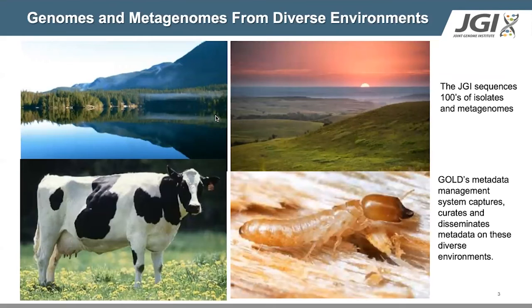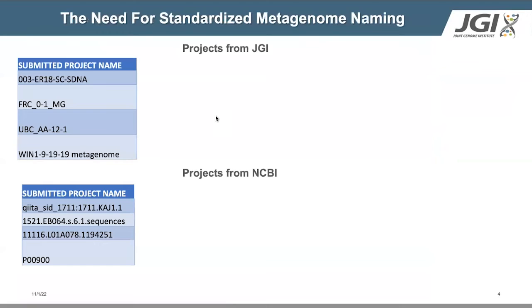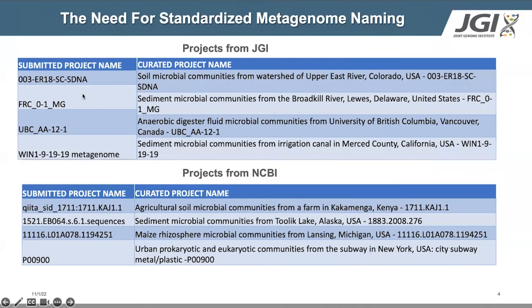At JGI, we sequence hundreds of organisms and samples from a variety of sources. GOLD's metadata management system captures, curates, and disseminates metadata for these projects from diverse environments. We developed and applied a standardized metagenome naming to projects that we curate in GOLD. Here are a few select examples of how users submitted projects to JGI or to NCBI that we imported and incorporated into GOLD, and how they look after we curate those projects by considering the habitat and geographical location where these samples came from and the microbial communities being studied.